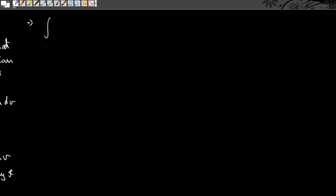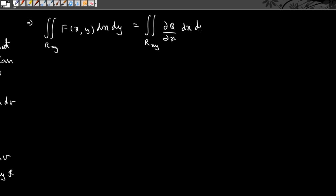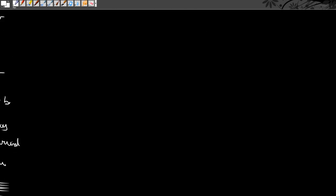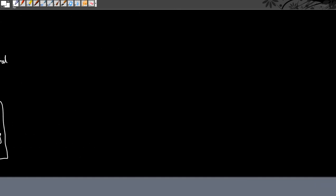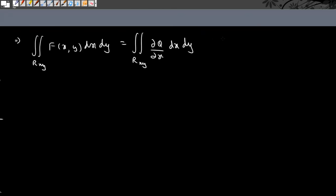Green's theorem states that the closed line integral along curve C of P dx + Q dy, where P and Q are functions of x and y, can be written as the double integral over the region R bounded by C of (∂Q/∂x − ∂P/∂y) dx dy. In particular, the integral over C of Q dy equals the double integral over R of ∂Q/∂x dx dy. Using this, our integral over R_xy of f(x,y) dx dy equals the integral over C_xy of Q(x,y) dy.